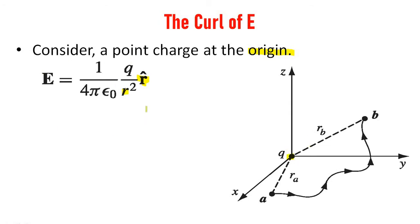So the equation can be represented like this: E equal to 1 by 4π epsilon 0, Q by R square R cap.